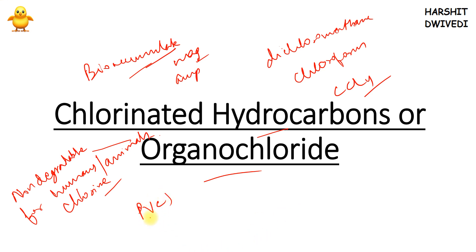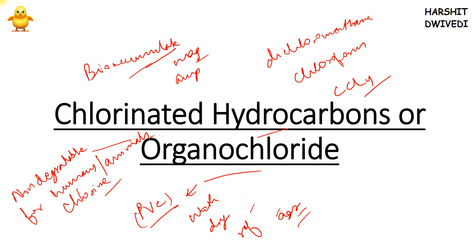Their applications are very varied. You would have heard about PVC — polyvinyl chloride — pipes, where organochlorides are used. They are also used in washing machines, drying machines, and refrigerators. They are used in the field of agriculture, as insecticides and termiticides. The range of uses of chlorinated hydrocarbons and organochlorides is very wide.